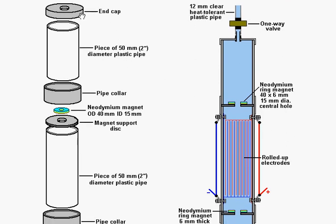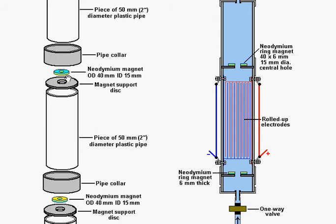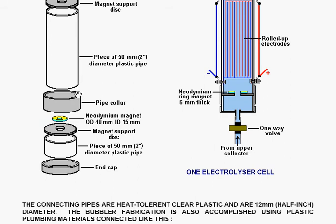That means that you have an end cap which fits onto a piece of 50 mm diameter plastic pipe. It goes into a pipe collar and then the neodymium ring magnet which is an outer diameter of 40 mm, an inner diameter of 15 mm and a thickness of 6 mm and with the north pole facing downwards in this position, resting on a circular cut out of plastic, which is exactly the same diameter as the 50 mm plastic pipe. Then you have the same at the bottom, you have a pipe collar, the neodymium magnet, this time with the north pole facing upwards, sitting on a plastic magnet support disc, sitting on a piece of 50 mm diameter plastic pipe and seated into an end cap.